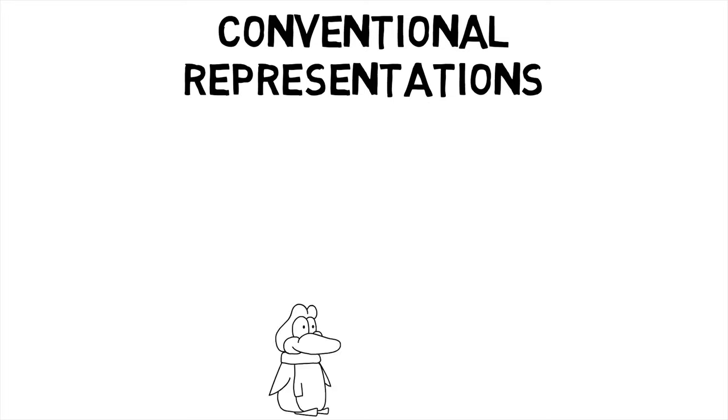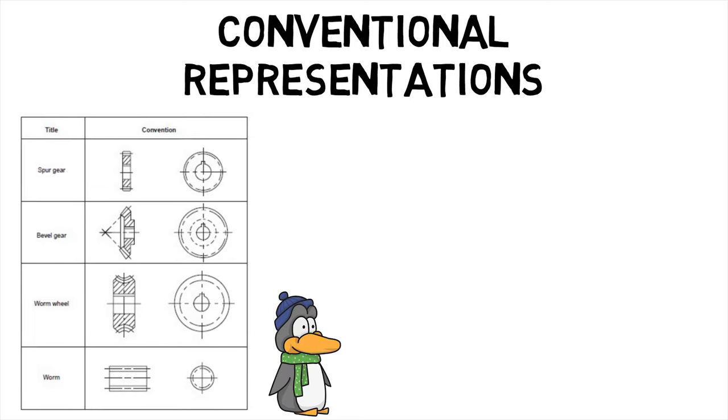When the drawing of a component in its true projection involves a lot of time, its convention may be used to represent the actual component. Shown here are the conventional representations of three common types of gears: namely spur gear, bevel gear, worm wheel, and its worm.